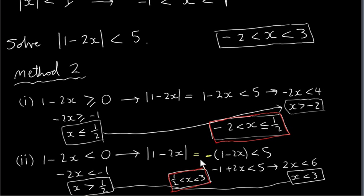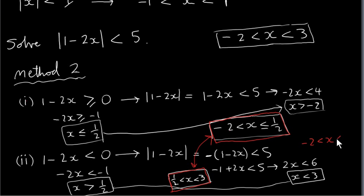So we have these two solutions and we take their intersection — the values of x that satisfy both simultaneously. If x lies between minus two and plus a half, and x also lies between plus a half and three, combining these gives x lying between minus two and plus three, which is what we saw from the first method. So this case-analysis method is quite time-consuming; it was shown just to give a better idea of how modulus inequalities work.